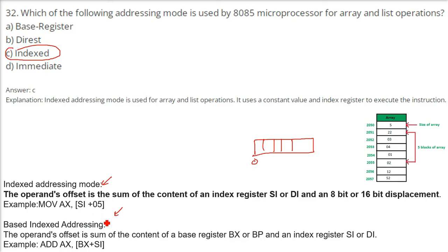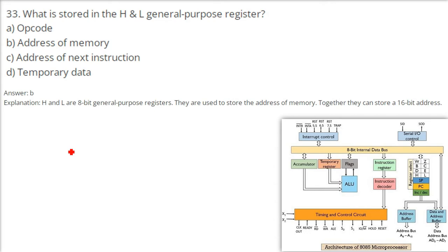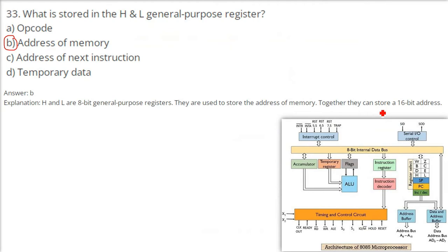What is stored in the HL general purpose register? General purpose registers are B, C, D, E, and HL. H is an 8-bit register and L is an 8-bit register, but combined, HL works as a 16-bit pair. H and L are 8-bit general purpose registers used to store the address of memory. Together they can store a 16-bit address — the address of memory is what HL stores.